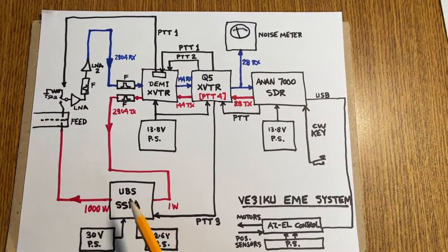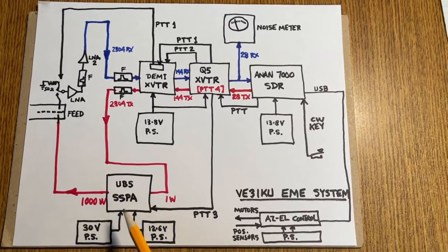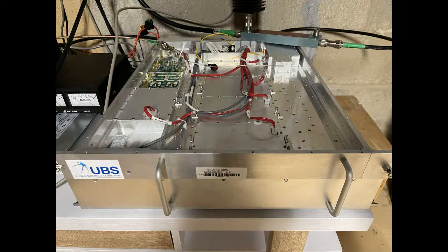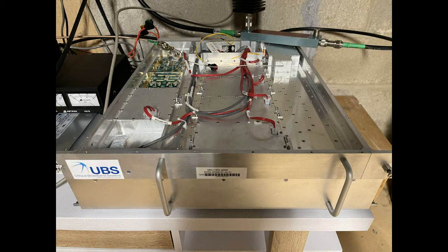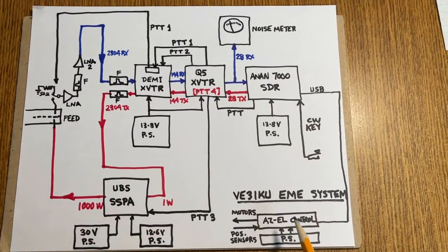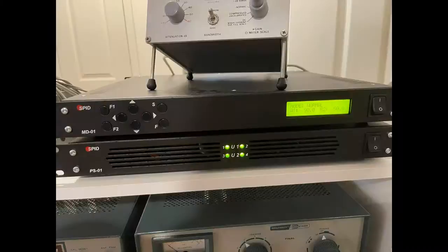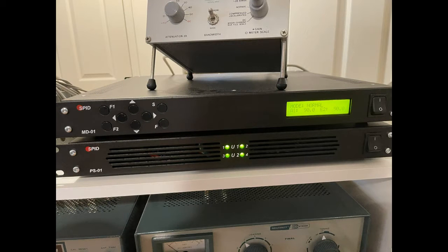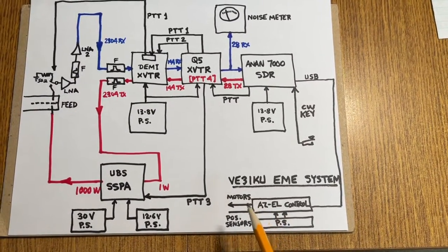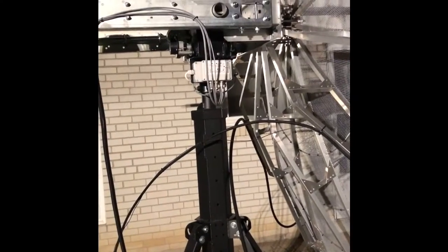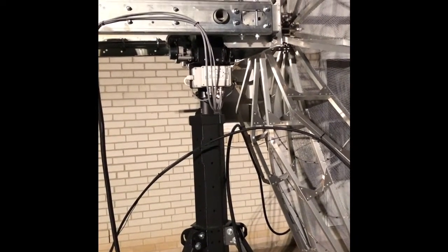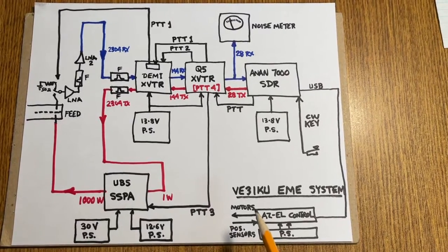There is a Unique Broadband Systems high-power solid-state power amplifier with LDMOS devices. And then there's an azimuth-elevation controller for controlling the antenna, the dish antenna motors, both azimuth and elevation planes.